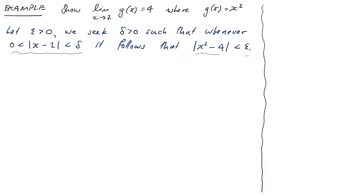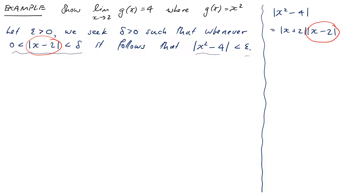So we have chosen an arbitrary positive epsilon, now fixed, and we're looking for a corresponding delta. I'll dive in by looking at |x² - 4|. Hopefully you can see we have the difference of two squares here, so that equals |x + 2| times |x - 2|. That's good because I'm trying to involve |x - 2| in my problem — I've got it right here. The problem is I've also got an additional |x + 2| factor and it's not immediately clear how to handle this.